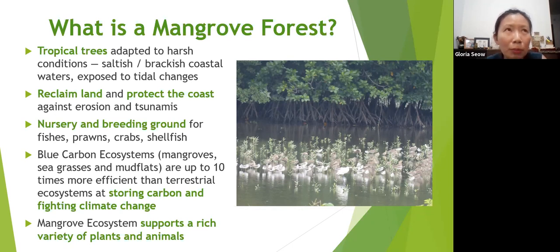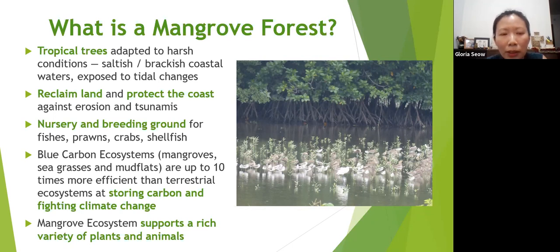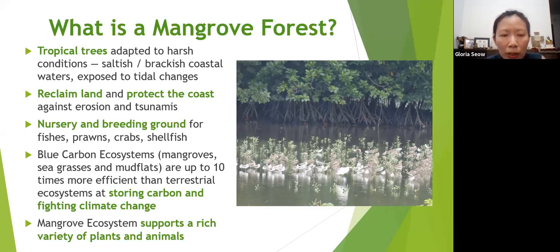Mangroves are important because they help to reclaim land through free land reclamation services. Because mangroves are located at the coast, rivers empty out into the sea at the river mouth, carrying silt and sediment which are deposited there. The mangrove roots help to retain these sediments so that over time new land is formed. Mangroves also help protect the coastline against wave erosion so the coast doesn't get washed away.